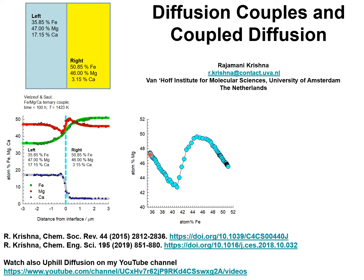In composition space, the composition trajectories follow a serpentine path. My objective today is to understand the reasons behind the uphill diffusion of magnesium. We also examine the rationale for the serpentine equilibration trajectory in composition space.